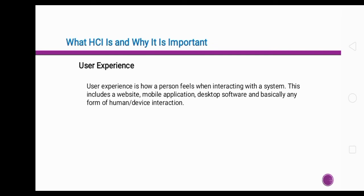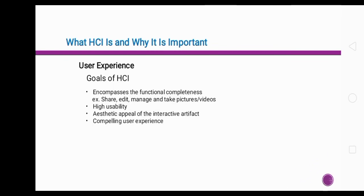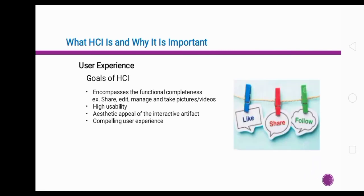The first goal encompasses functional completeness. Functionality refers to whether a design works and helps the user meet their goals and needs. When a design is highly functional, it does what it's expected to do and does it well. For example, when you use Google Maps, it gives you the correct route to your destination. Or when you are using Facebook, you can like, share, follow, and also comment — that's why you are still using Facebook to this day.